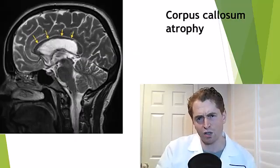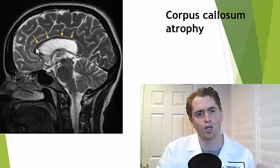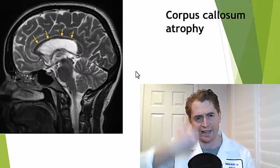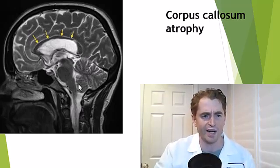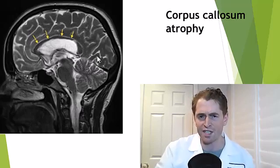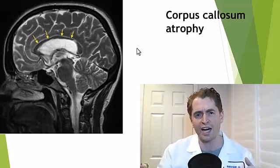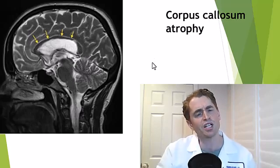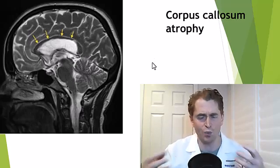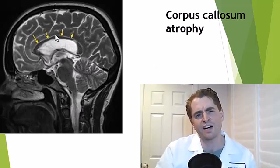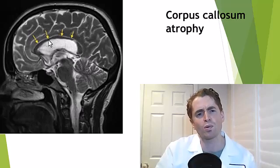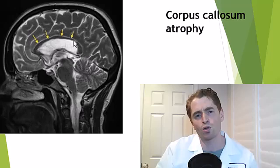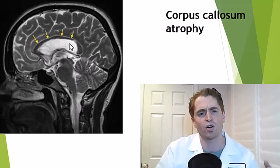Here we have corpus callosum atrophy — shrinkage of this white matter structure. We're looking at sagittal images right through the center of the brain. This is the spinal cord, brain stem, nose, and tongue. The corpus callosum connects the two hemispheres of the brain and is involved in communication between different brain areas. When it's injured, this can be associated with cognitive symptoms, especially processing speed — difficulty doing things quickly and multitasking. This is a very impressive example; normally the corpus callosum is much, much thicker. You can also see a multiple sclerosis plaque, some generalized atrophy, enlarged sulci, and an enlarged lateral ventricle.